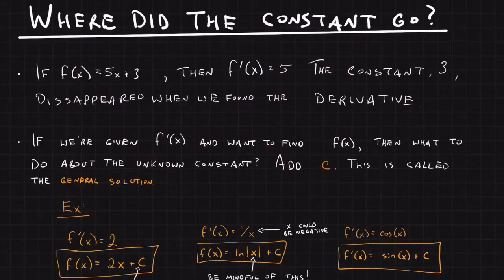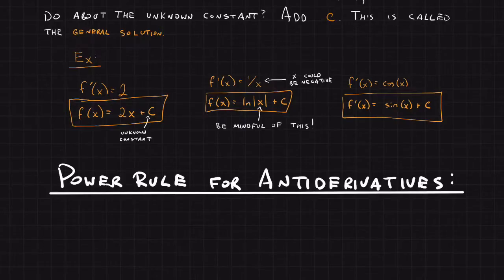Every time you find the antiderivative, you must put the plus C at the end. If you don't, then your answer is wrong. When we first learned how to find the derivative of functions, we learned about the power rule. Now that we're doing antiderivatives, we can use the reverse of the power rule. This is called the power rule for antiderivatives.